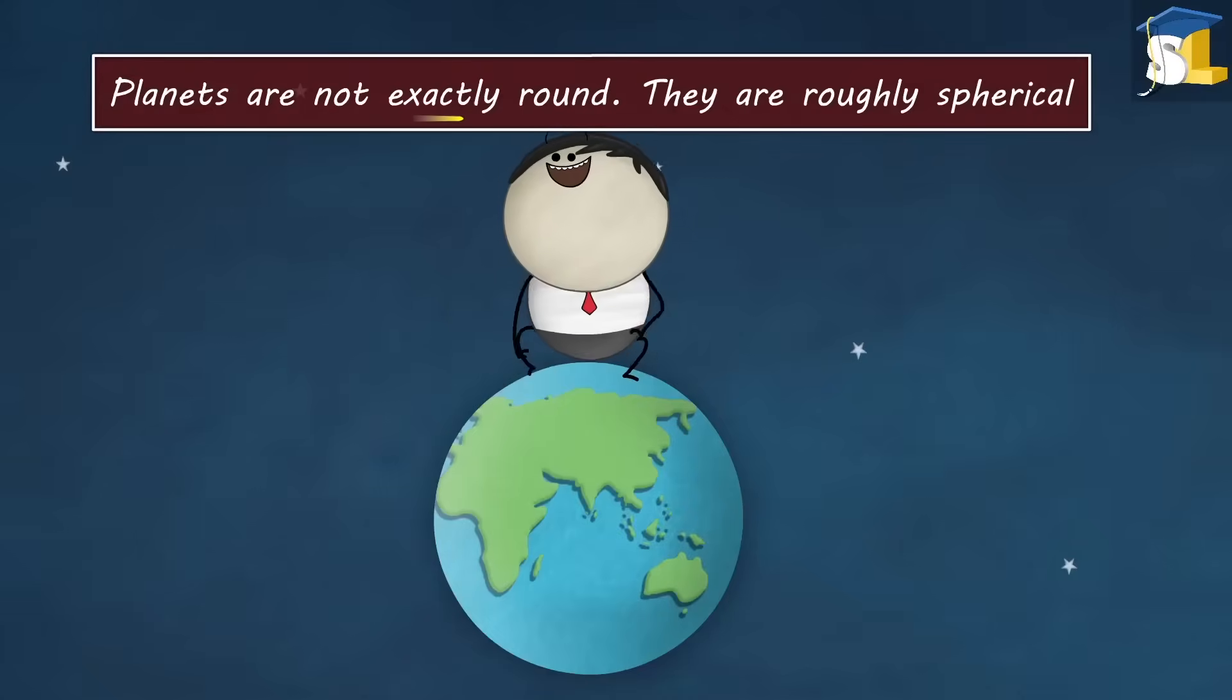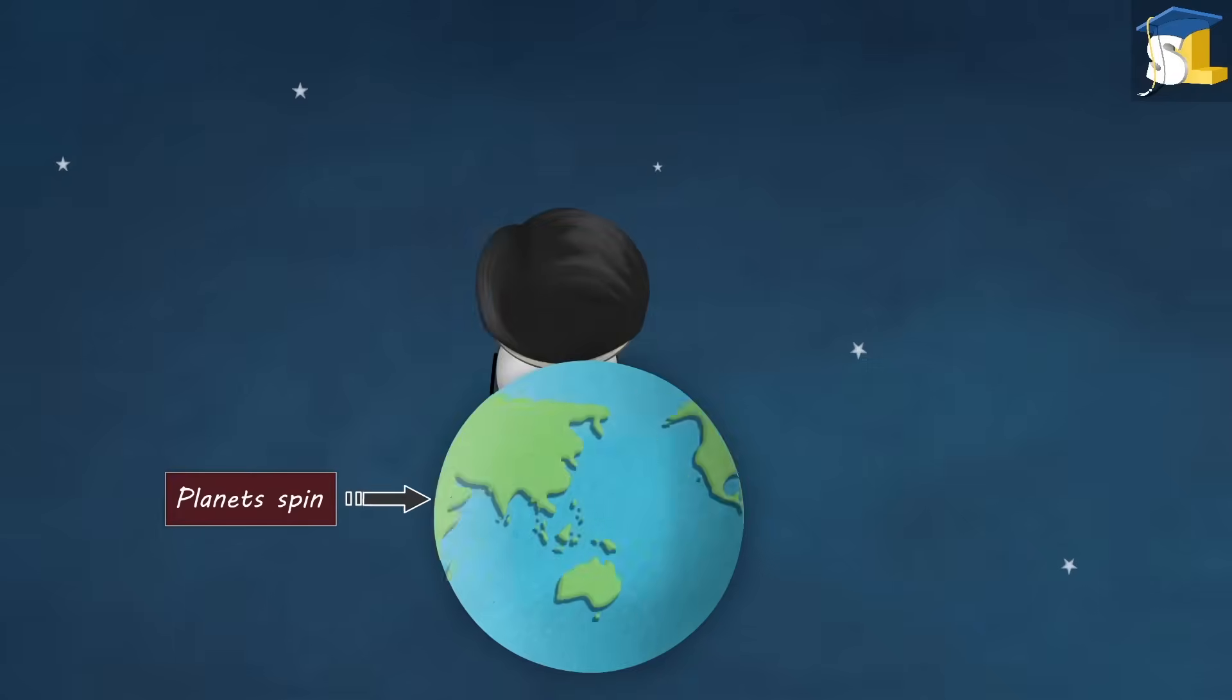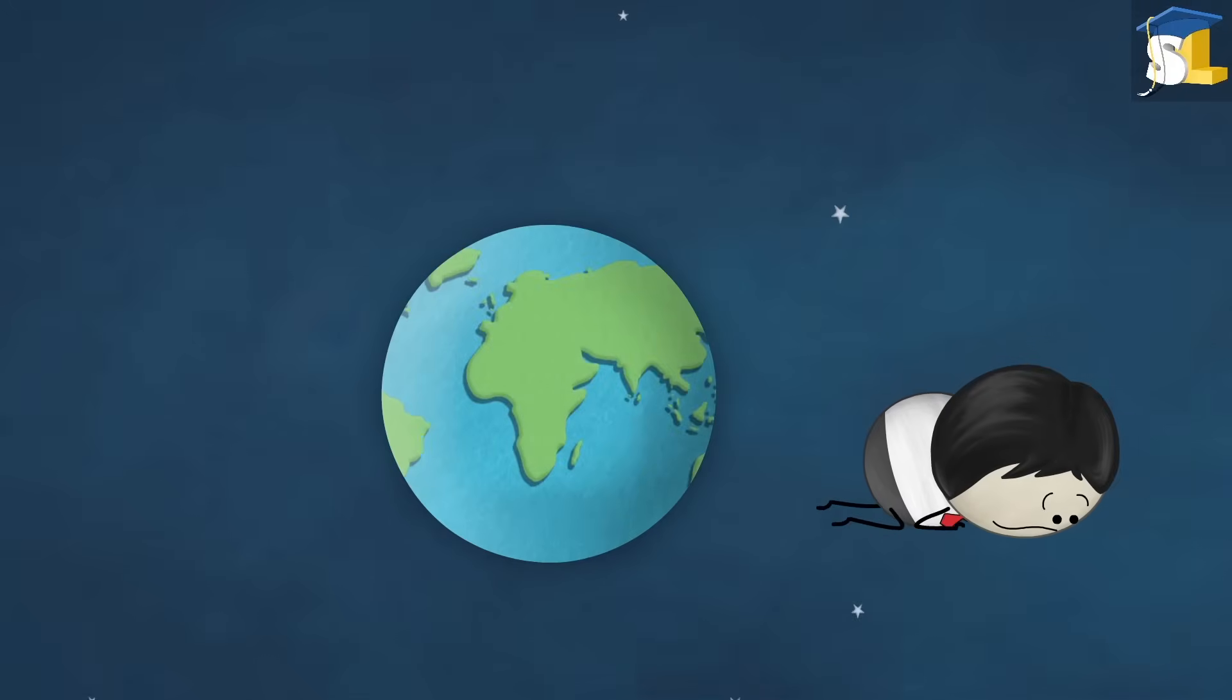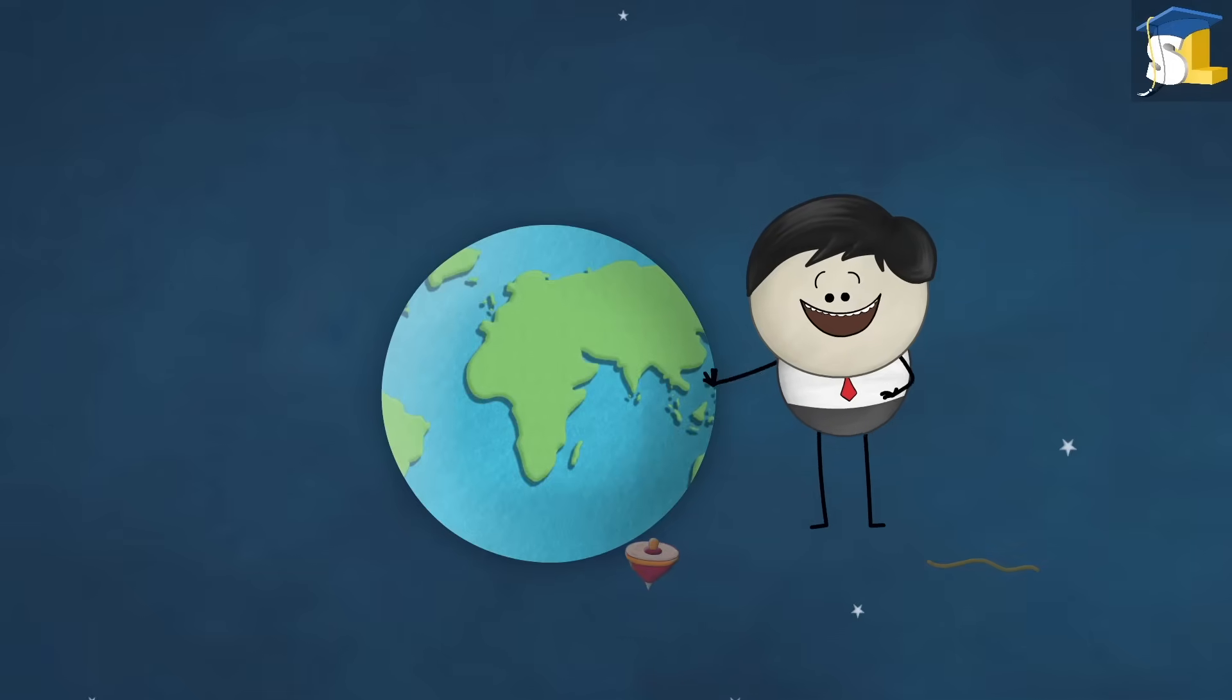However, planets are not exactly round. They are roughly spherical. This is because planets spin on their axis. Just like a spinning top, right? Absolutely.